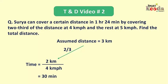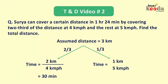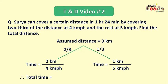Now, out of 3 km, if the journey of 2 km is covered, the rest of the journey, which is 1/3 of the total journey, will be 1 km. It is given that this journey is covered at 5 km per hour, so the time taken is distance upon speed, which is 1/5 hour or 12 minutes. The total time taken is 30 minutes plus 12 minutes, equal to 42 minutes.